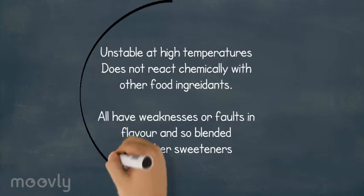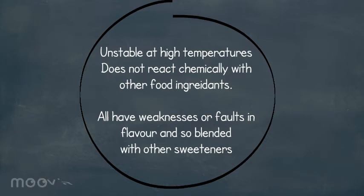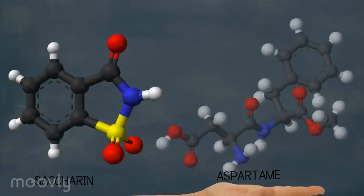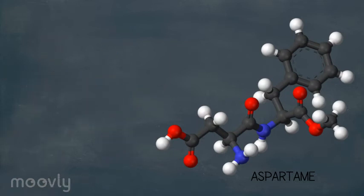Saccharin is unstable at high temperatures but fortunately does not react chemically with other food ingredients. All sweeteners have chemical weaknesses or faults in their flavour and so are commonly blended with other sweeteners. Saccharin is often blended with aspartame in diet carbonated soft drinks due to aspartame's relatively short shelf life.